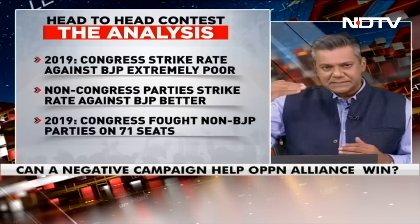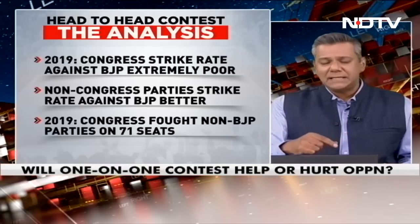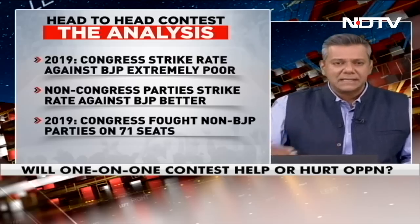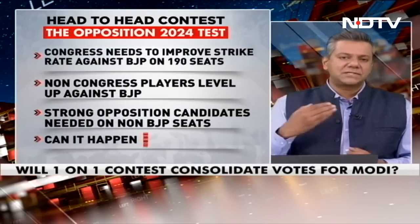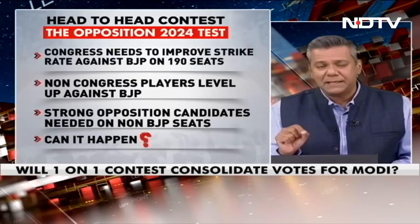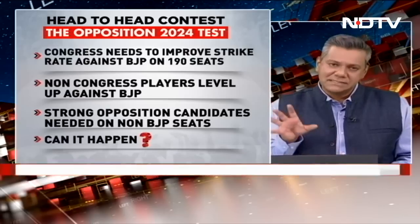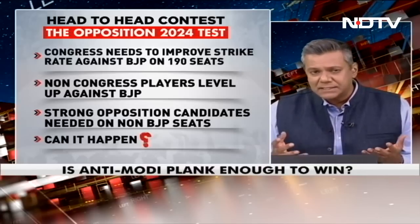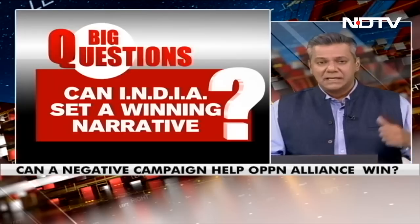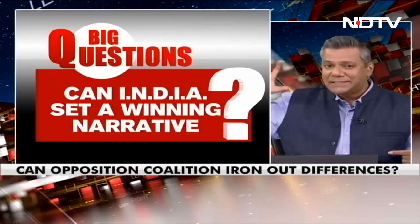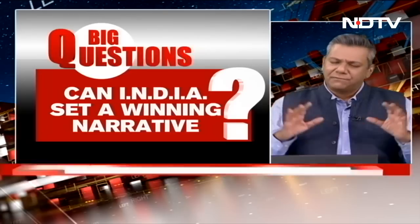In 2019, the Congress party's strike rate against the BJP was extremely poor. Non-Congress parties had a better strike rate against the BJP. The Congress fought non-BJP parties in as many as 71 seats. The India Alliance would need to improve their strike rate against the BJP on 190 seats. Non-Congress players must level up against the BJP. There must be strong opposition candidates in non-BJP seats — seats where the BJP has not typically had a strong presence. Can the India alliance set a winning narrative, given these numbers?